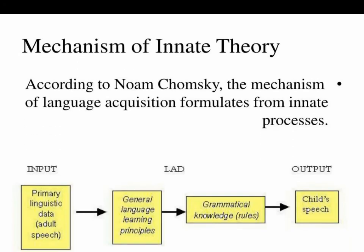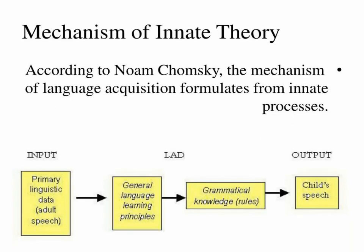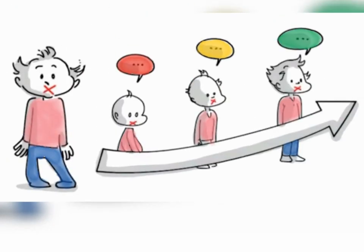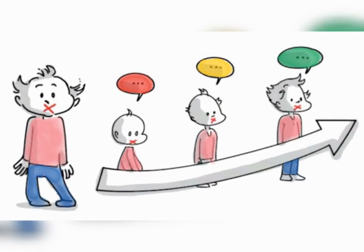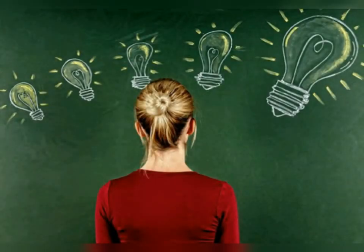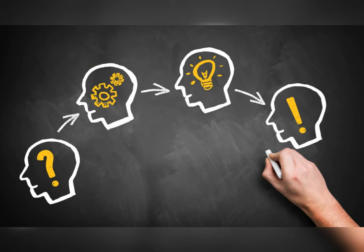Noam Chomsky's innateness theory, or nativism theory, proposes that children have an inborn or innate faculty for language acquisition that is biologically determined. It seems that the human species has evolved a brain whose neural circuits contain linguistic information at birth, and this natural predisposition to learn language is triggered by hearing speech. The child's brain is then able to interpret what she or he hears according to the underlying principles or structure it already contains.